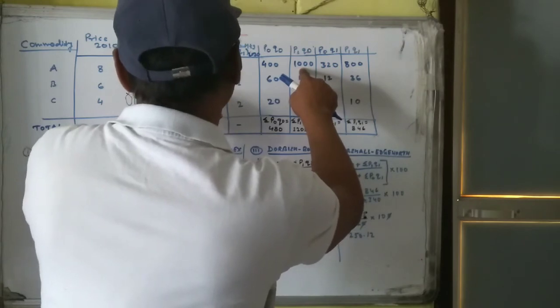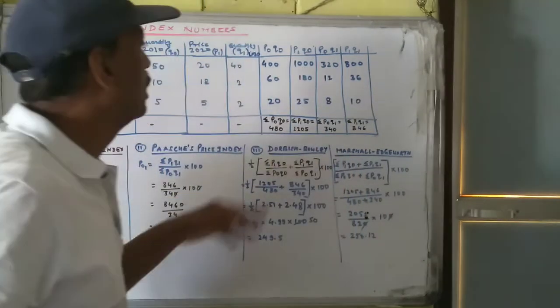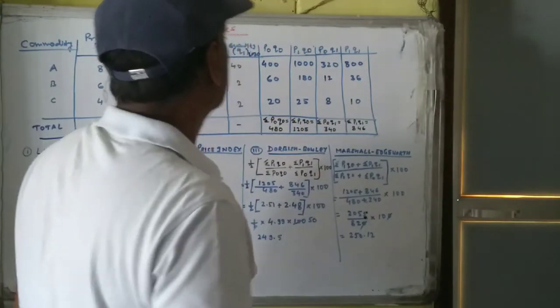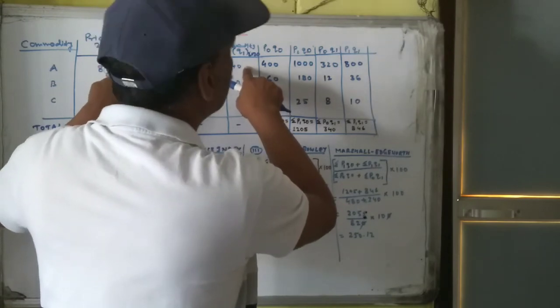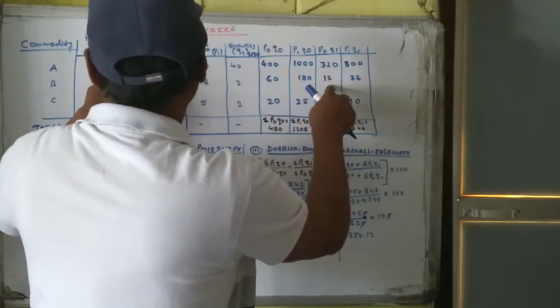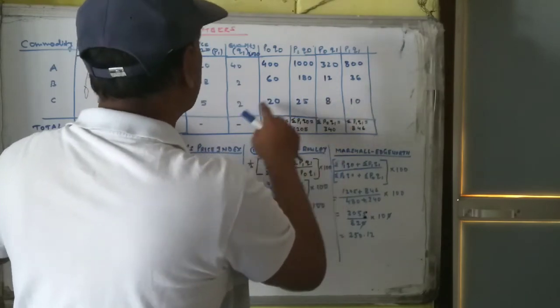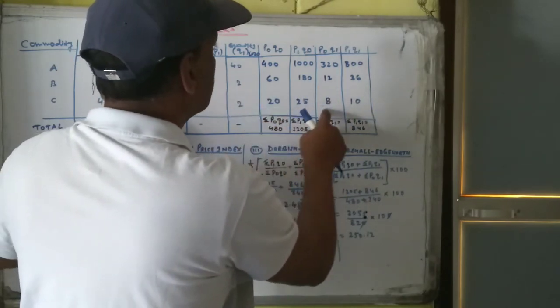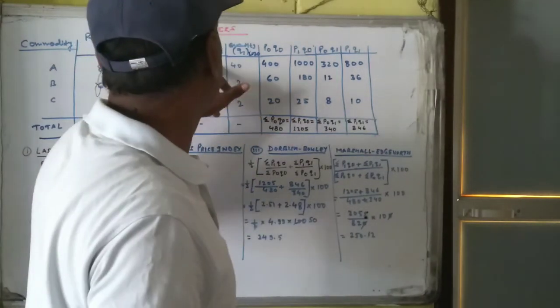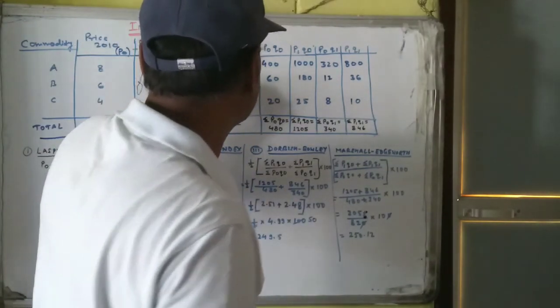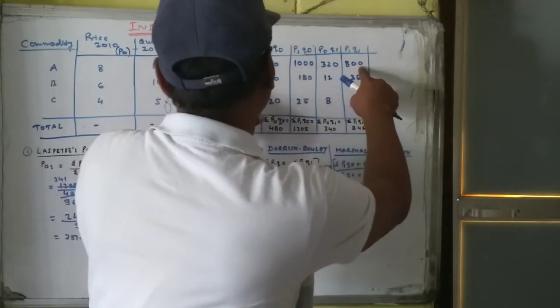10 into 18... 5 into 5 is 25. After this P0Q1, so 8 into 40 is 320, 6 into 2 is 12, 4 into 2 is 8. And last P1Q1, the price of current year times quantity of current year. So 20 into 40 is 800, 18 into 2 is 36, 5 into 2 is 10.